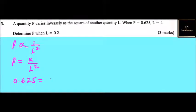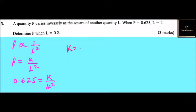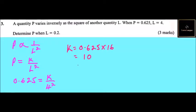Because we are told when p is 0.625, l is equals to 4, so you get k: you divide by 4 squared. 4 squared is 16, so it is 0.625 multiplied by 16, which will give you k equals to 10.